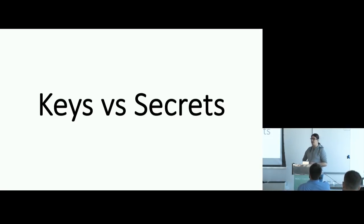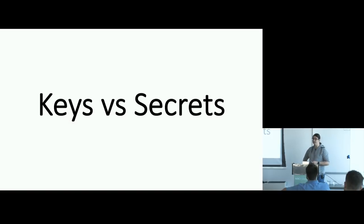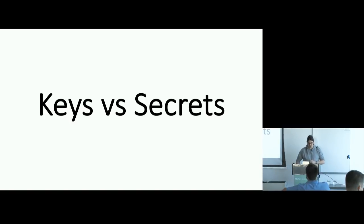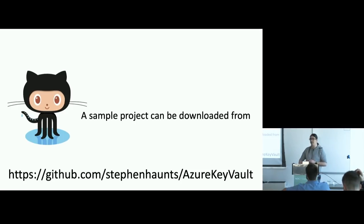Keys versus secrets: keys, as you can imagine, are encryption keys — specifically asymmetric RSA keys on Azure Key Vault. But you can also store things called secrets. A secret is effectively like a key-value pair store. You can write in things like database connection strings, database passwords, API keys — anything you want to keep out of your config files. I've got all the code available on GitHub under the MIT licence. The NuGet package to install is Microsoft.Azure.KeyVault, and it's .NET Standard 2 compliant, so it works in .NET Core.